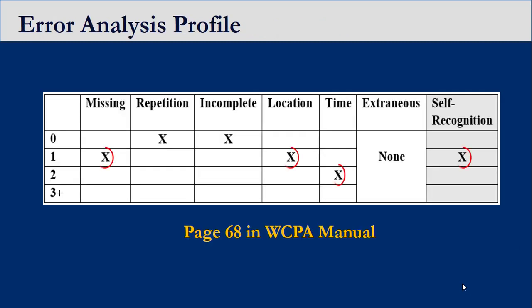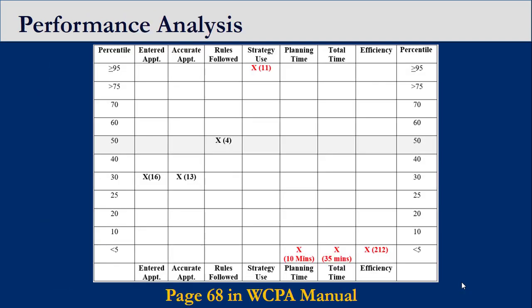These errors can be depicted in an error analysis profile as shown here. Kathy demonstrated average performance in appointments entered, accuracy, and rules followed. However, Kathy's planning and total time scores and efficiency score are below the 5th percentile, indicating that she required more time than other people in her age group to achieve low average accuracy. Kathy also used excessively more strategies when compared to other people in her age group, and this may have contributed to inefficiencies in her performance.